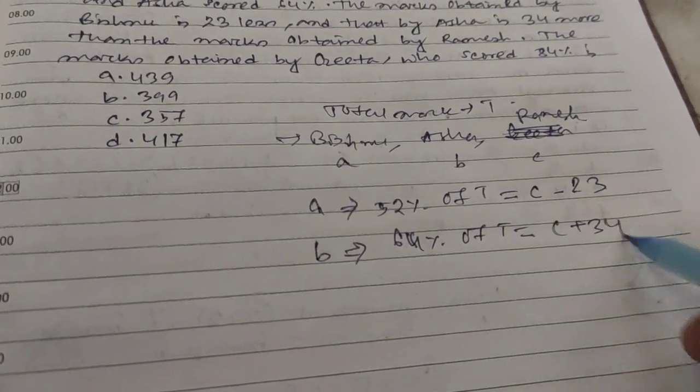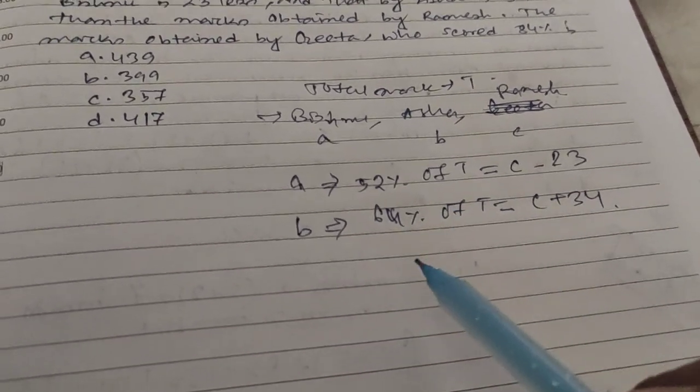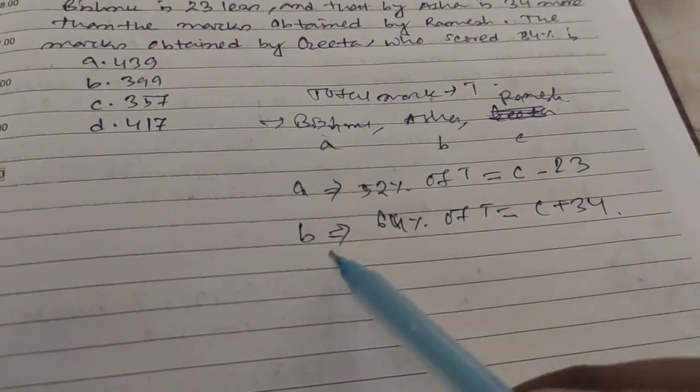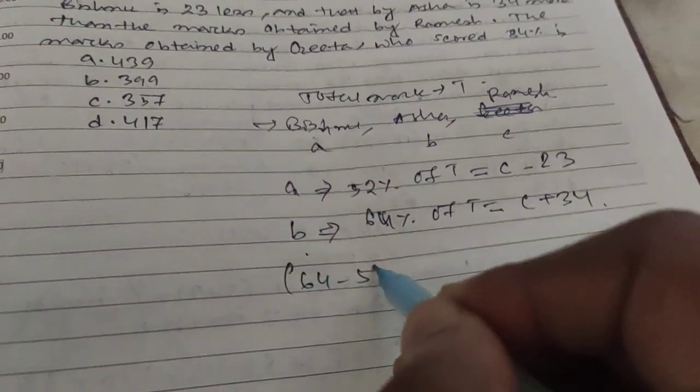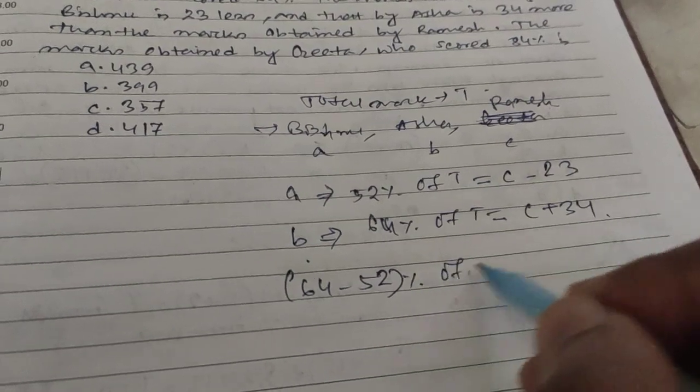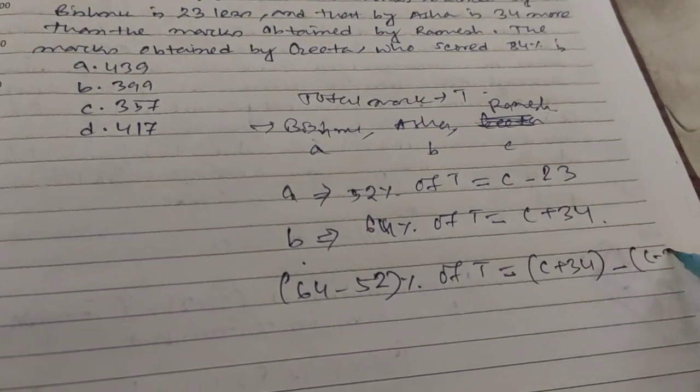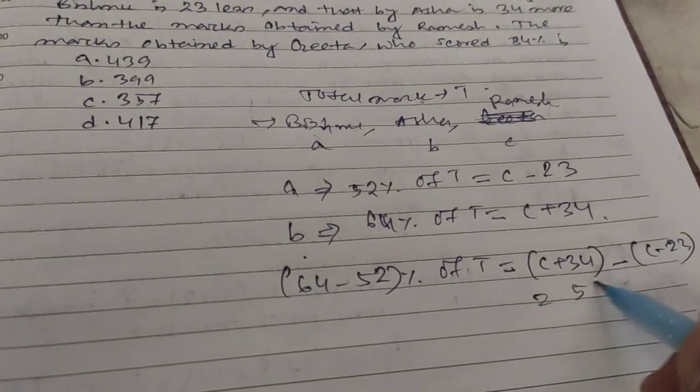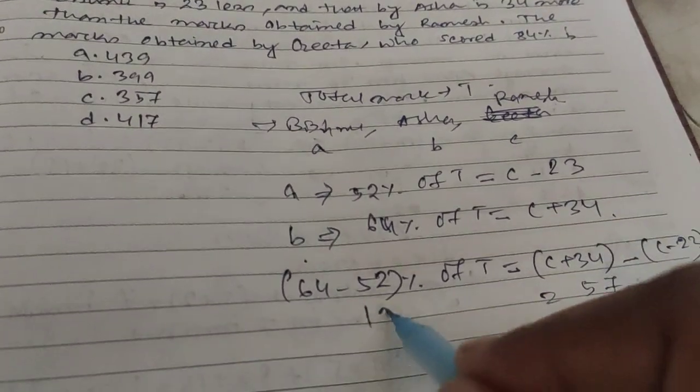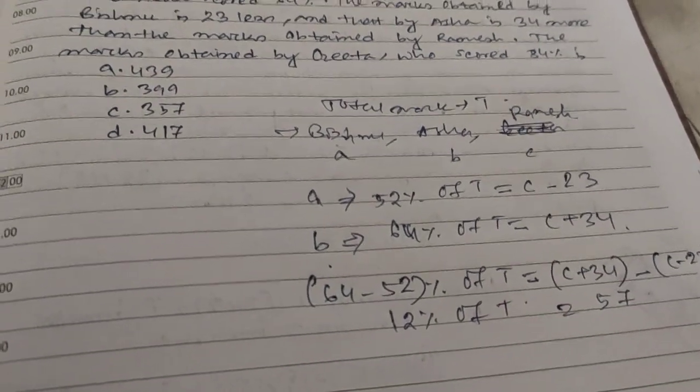So if you subtract B's marks minus A's marks, then it will be 64 minus 52 percent of T, which equals C plus 34 minus C minus 23. So C and C will be cancelled out, this will be 57. So this is 12 percent of T.